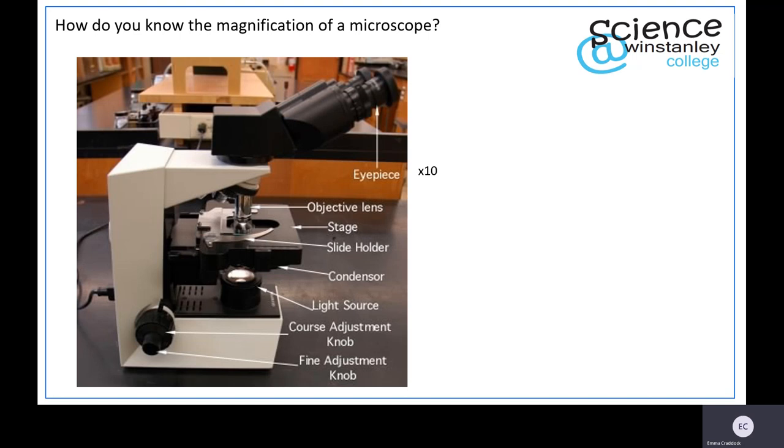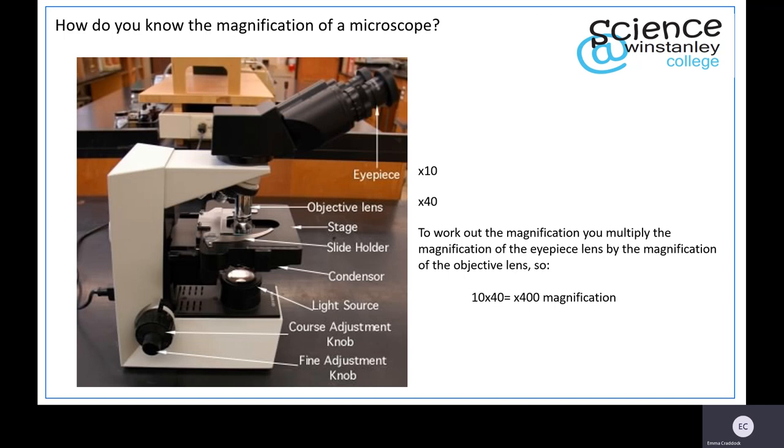You then find the magnification of your objective lens. On this particular microscope it is times 40. To work out the magnification you multiply the magnification of the eyepiece lens by the objective lens. So for this microscope it is 10 times 40, giving you times 400 magnification. This means your image size is 400 times bigger than the actual size of your object.